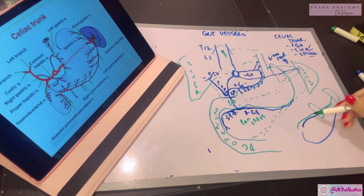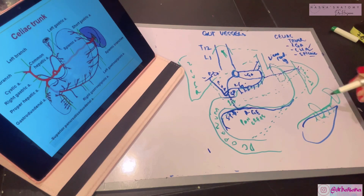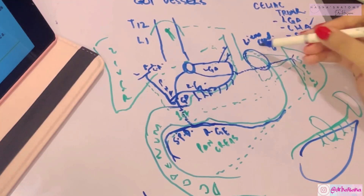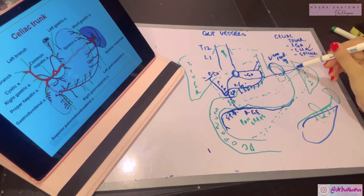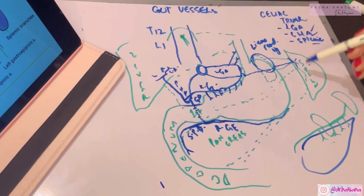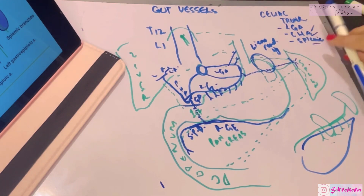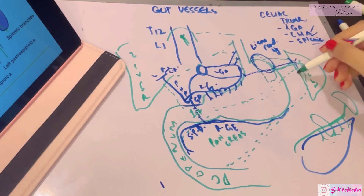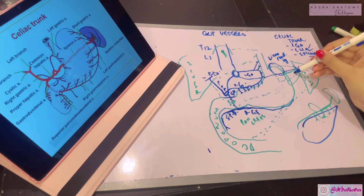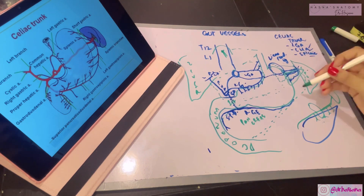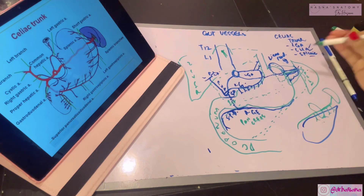During the splenic artery's course it gives pancreatic branches to supply the body and tail of the pancreas. Apart from this, the splenic artery gives five to seven short gastric arteries that supply the fundus of the stomach. These short gastric arteries arise from the terminal part of the splenic artery and travel within the gastrosplenic ligament to reach the fundus of the stomach.